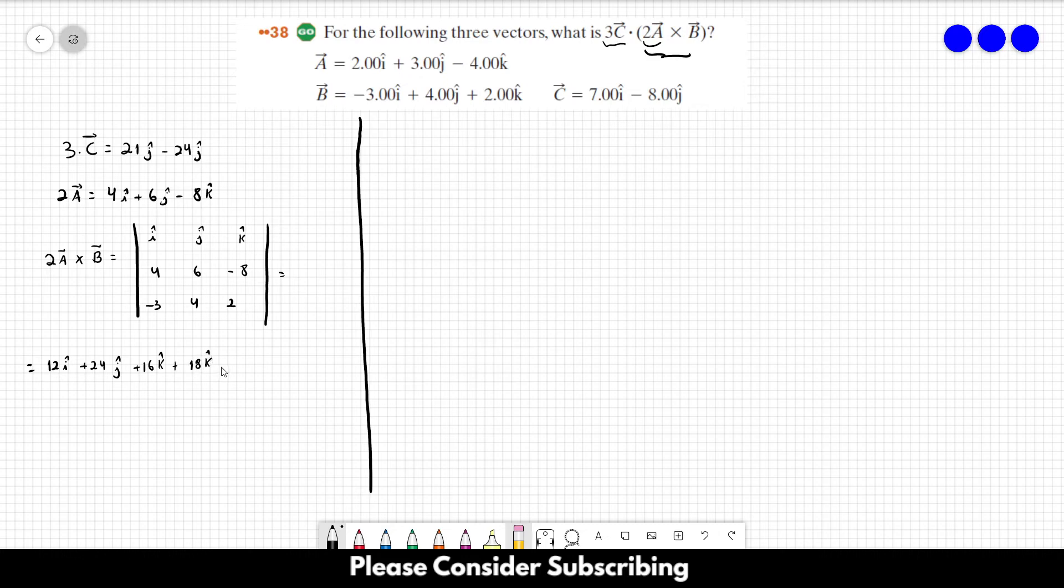So what else... minus 8 in the J direction plus 34 in the J direction plus 34 in the K direction. So this vector over here is this term, the right term over here.